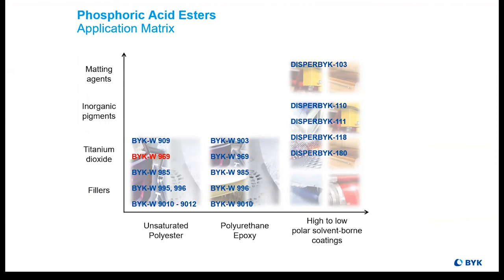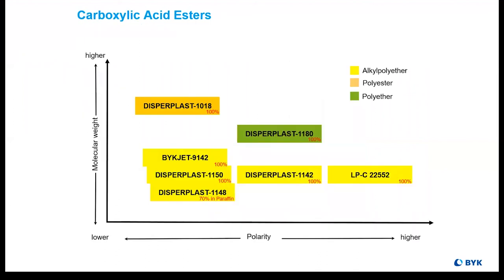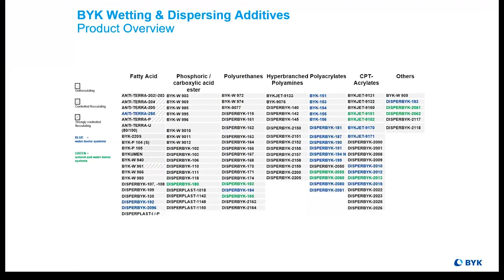Phosphoric acid esters have an excellent result in wetting agents, inorganic pigments, titanium dioxide, and fillers. Carboxylic acid esters have a variety of offerings as well, based on polarity and molecular weight at BIC. The group of phosphoric acid esters and carboxylic acid esters may not be as exciting as all the other additives, but in a world of colors, white bases are the foundation.